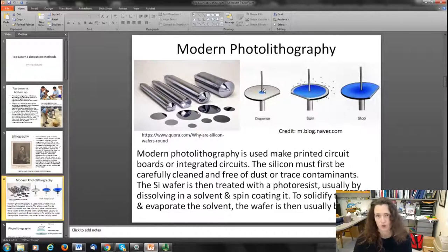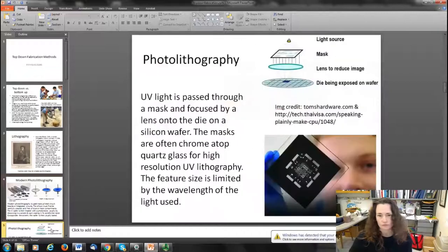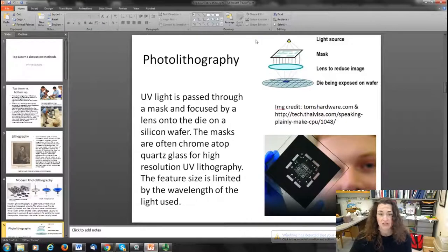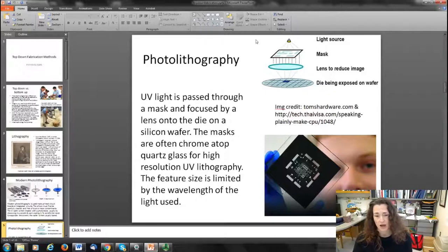Once the film is deposited, you need to solidify that and bake away the solvent, turning it into a solid from a liquid. Then ultraviolet light is used and passed through what's called a mask, focused by a lens onto a die or silicon wafer. The masks are patterns of what you want to print onto your silicon wafer.